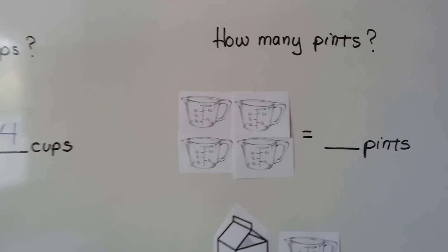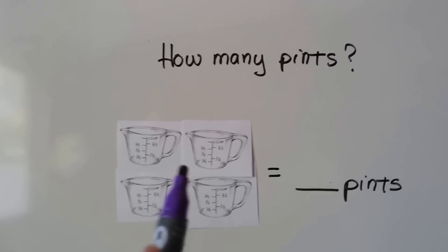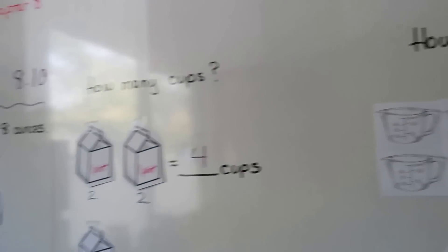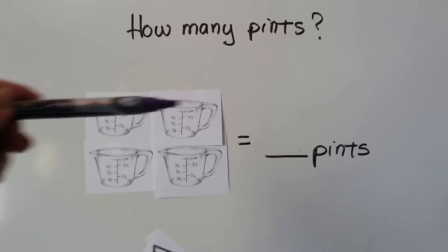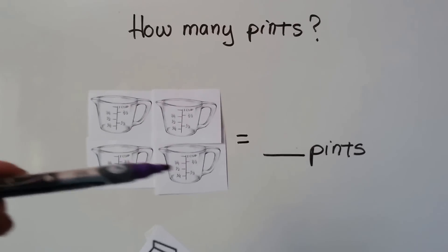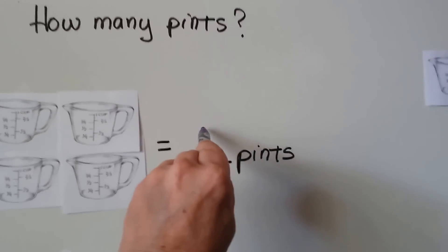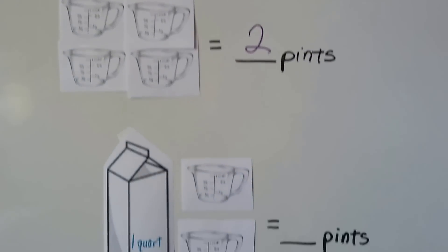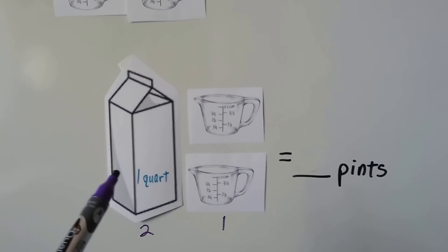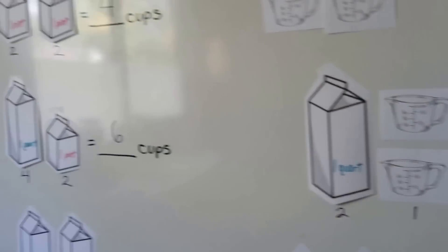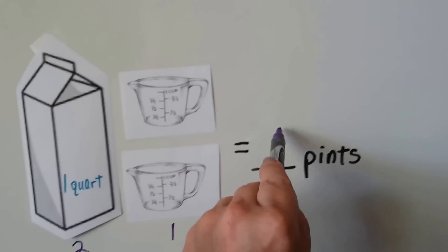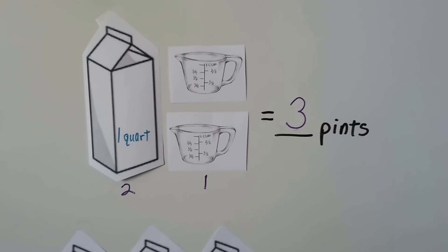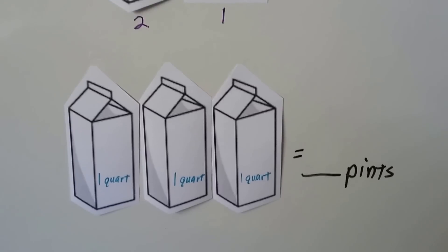Now let's see if we can figure out how many pints are here. We've got four cups. We know that two cups makes one pint, so these two cups makes one pint, and these two bottom ones would make another pint. That'd be one pint, two pints. How many pints are in one quart? Two. There's two pints here, and we know two cups makes a pint, so two plus one would make three pints.